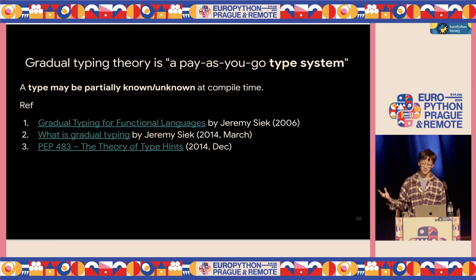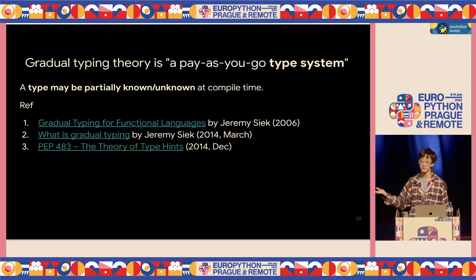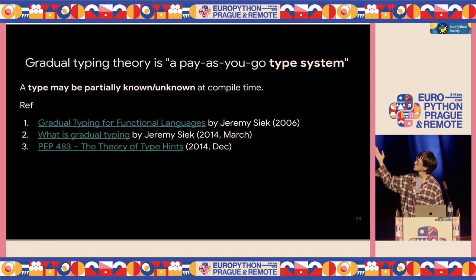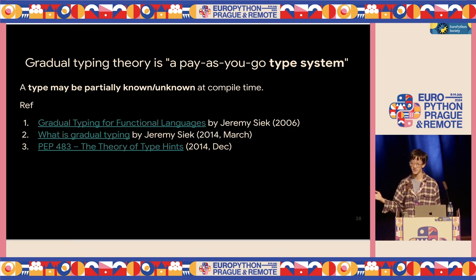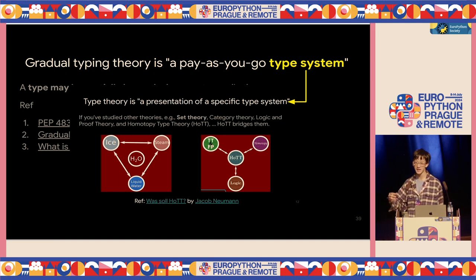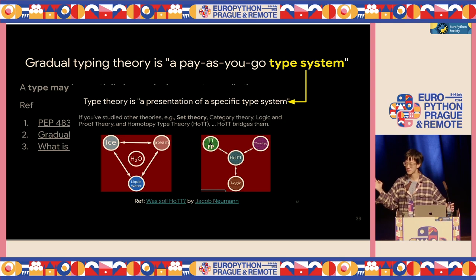Gradual typing theory is another type theory — it's a pay-as-you-go type system. The type TRD may be partially known or unknown at compile time. The foundational paper is by Jeremy Siek in 2006. Later, Jeremy Siek wrote another paper with Python examples. In the same year we also got PEP 483, which is the theory behind PEP 484 on type hints. Both gradual typing and type theory are kinds of type systems.